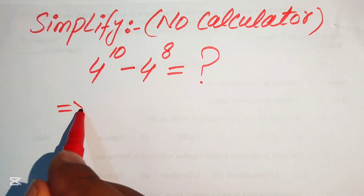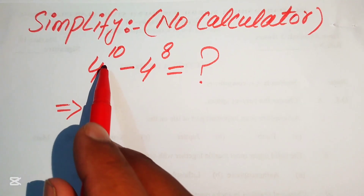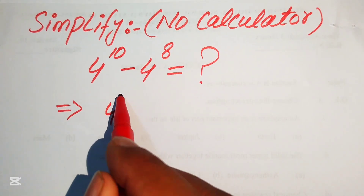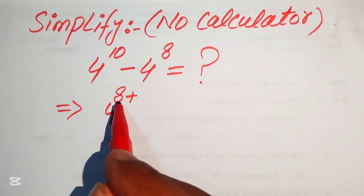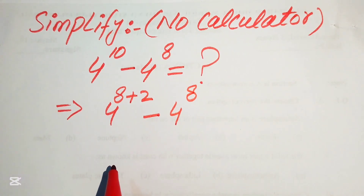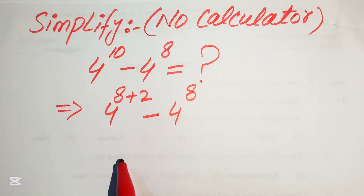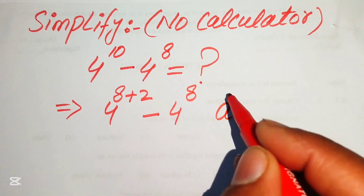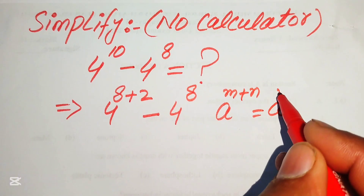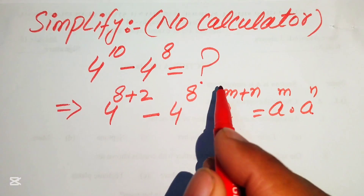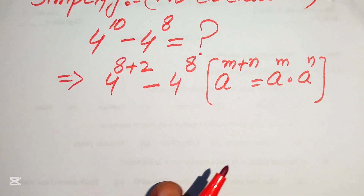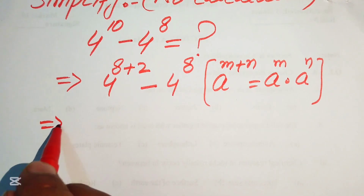The very first step is to focus on the exponent of the first term. The exponent is 10, and we write it as 4 to the power of 8 plus 2, minus 4 to the power of 8. Now we can apply the exponent law: a to the power of m plus n equals a to the power of m multiplied by a to the power of n.